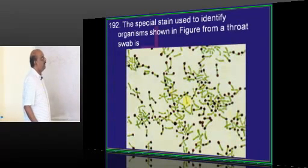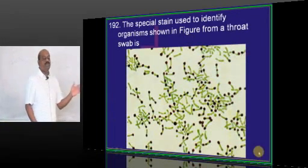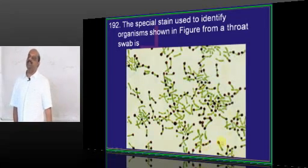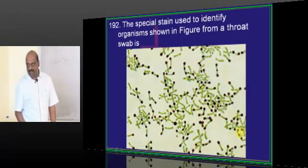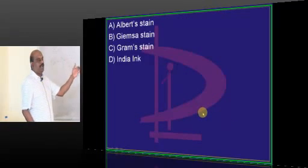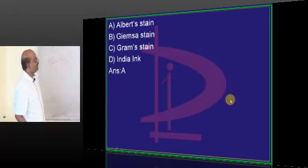What is the special stain used to stain these organisms which are racket-shaped? They are Corynebacterium diphtheriae, and we use the Albert stain in order to stain Corynebacterium diphtheriae.